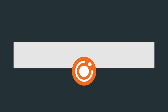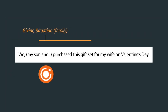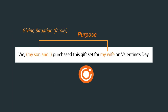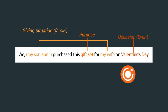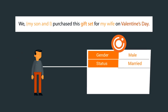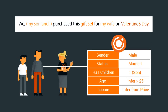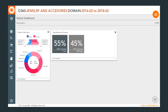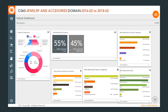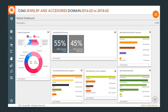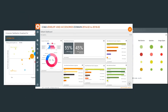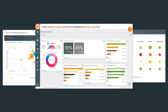Meet O360, a patent-pending machine learning platform that uses the wealth of customer conversations online to derive actionable insights. Through natural language processing, O360 develops a deep understanding of specific product and service categories. Through exploratory dashboards or our API, brands can understand the importance and sentiment around different product features and attributes, perceptions, and purchase and consumption occasions.